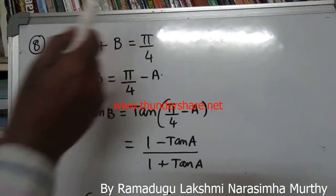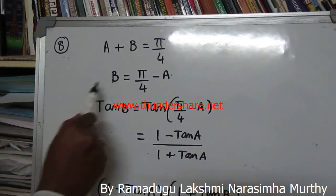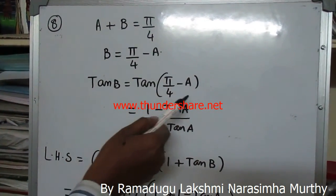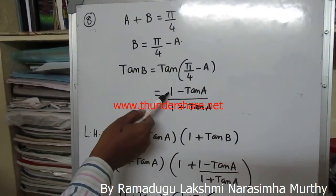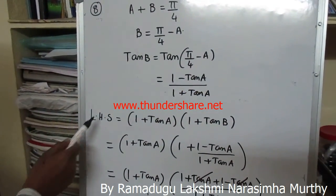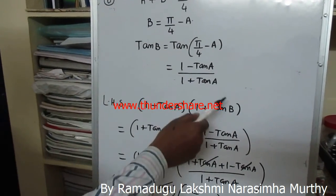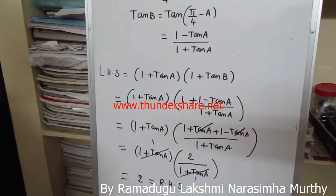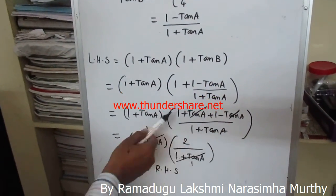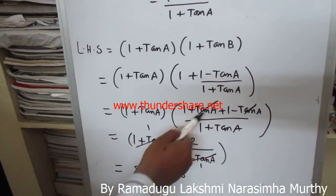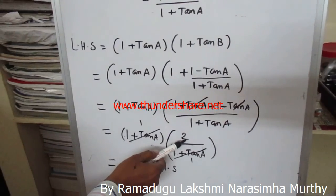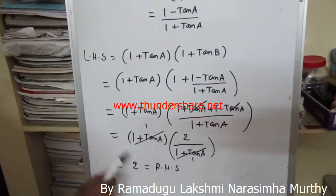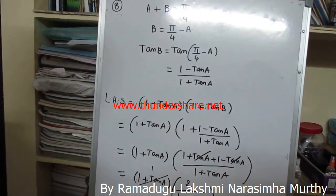Given A + B = 45°, so B = 45° - A. Applying tan on both sides: tan B = tan(45° - A) = (1 - tan A)/(1 + tan A). Consider (1 + tan A)(1 + tan B) = (1 + tan A) · [1 + (1 - tan A)/(1 + tan A)] = (1 + tan A) · [(1 + tan A + 1 - tan A)/(1 + tan A)] = 1 × 2 = 2. Hence (1 + tan A)(1 + tan B) = 2 is proved.